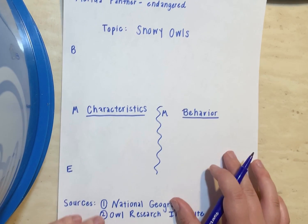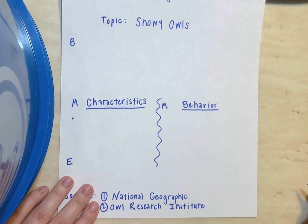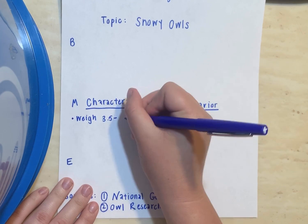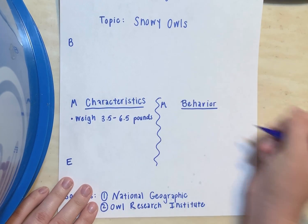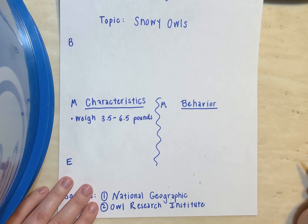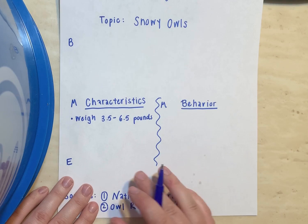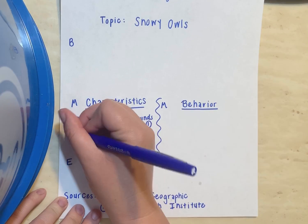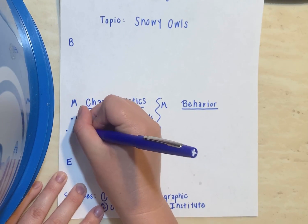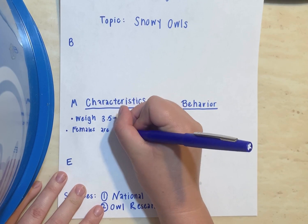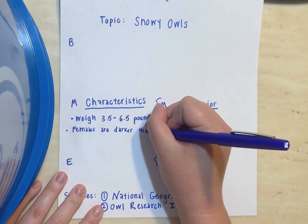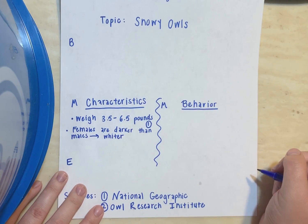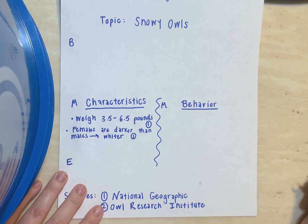For characteristics — remember, in your plan you only use bullet points. I found out that snowy owls weigh three and a half to six and a half pounds. That is a characteristic they have. Don't forget, you need to write down which source you found your information from. I found that from National Geographic, so I'm going to put a number one. I also found out that females are darker than males, and males are usually whiter than females — also from source one.